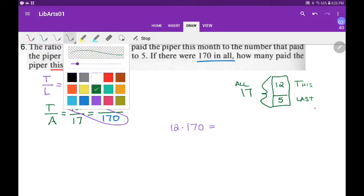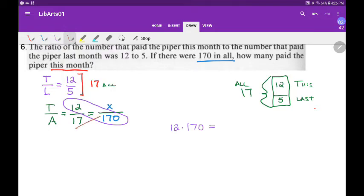We're going to say 12 times 170 is equal to, let me change colors here, we'll say 17 times X. Okay, 17 times X.